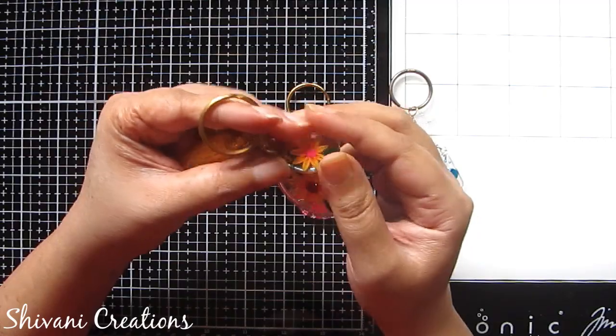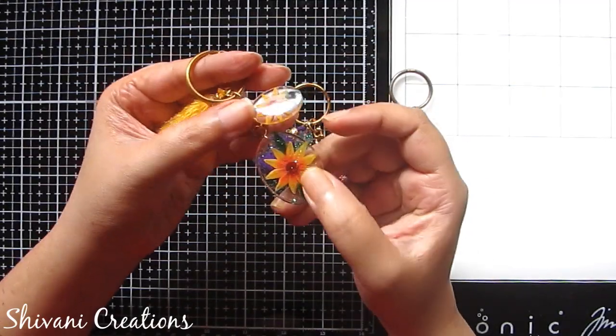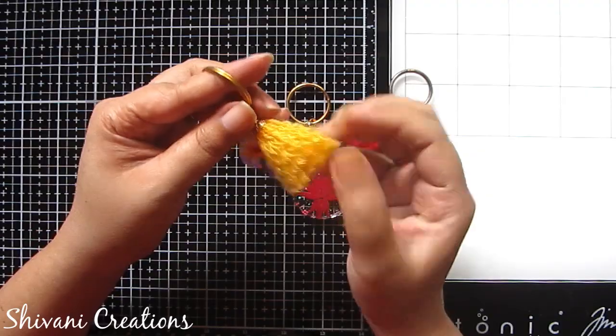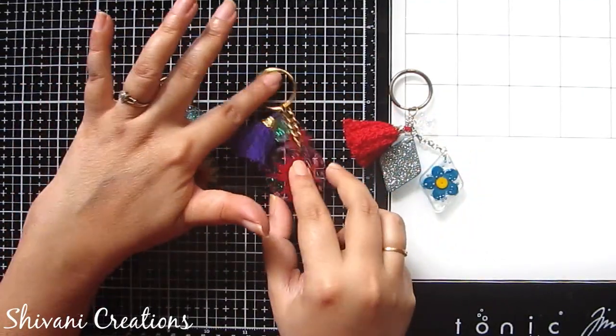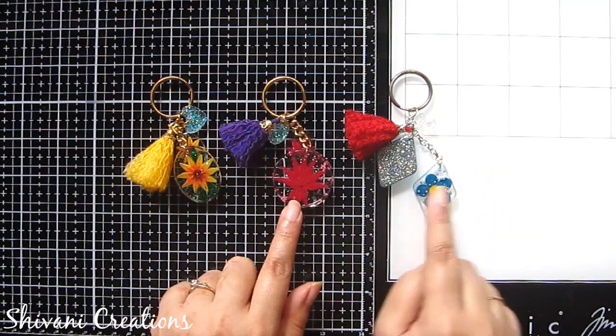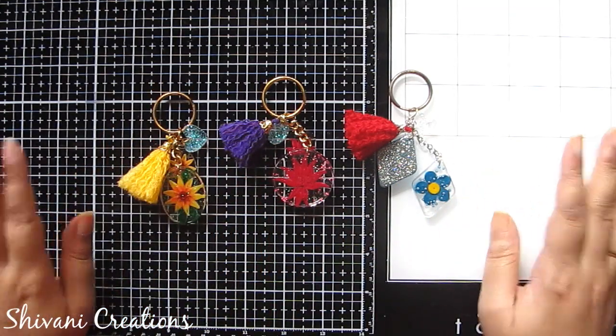Yes, these are the quilled resin keychains and this is permanently protected by the resin. I will also show you how to create this cute yarn tassel and I have created them in three different styles. So let's get started.